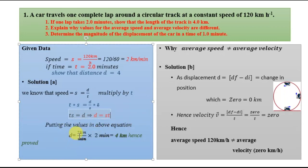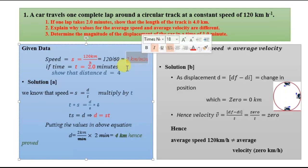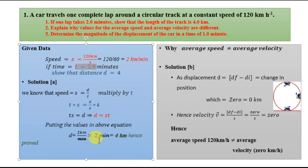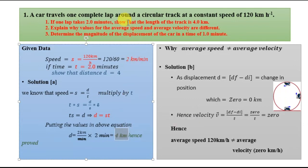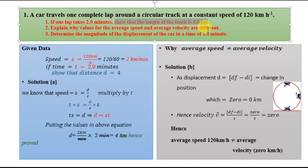Putting in the values: d equals two kilometers per minute multiplied by two minutes, which gives four kilometers. This is the required answer, showing that the length of the track is four kilometers. Now let's proceed to part B of the problem, which states: explain why the values for average speed and average velocity are different.